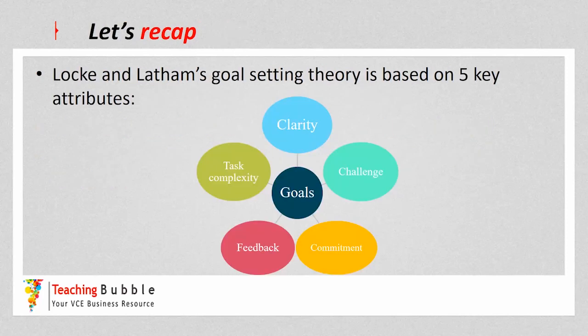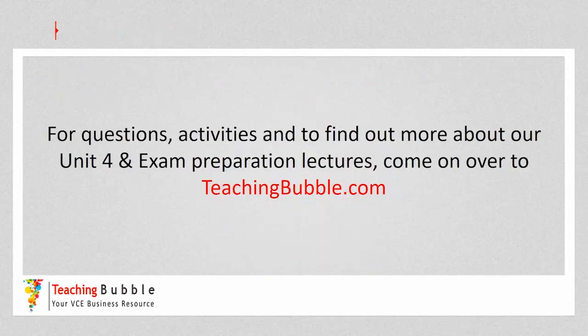To recap, Lock and Latham's theory is a goal setting theory on how goals can provide motivation for employees, based on five key principles: clarity, challenge, commitment, feedback, and task complexity. It's crucial that all five elements are involved in the setting of goals in order to provide a high level of motivation. For questions, activities, and exam preparation lectures, visit teachingbubble.com.